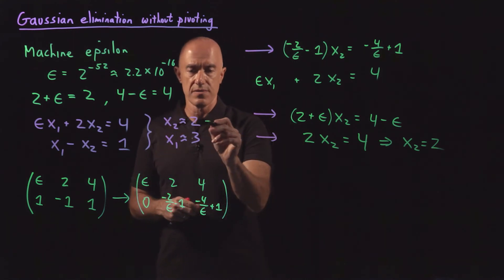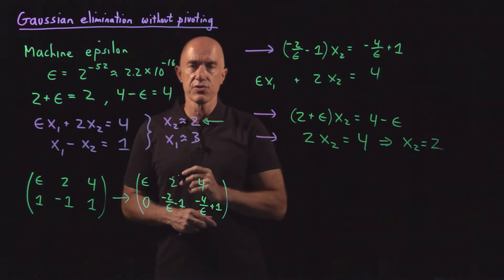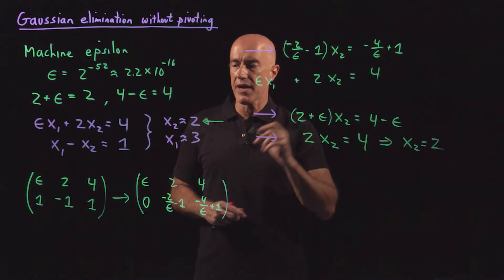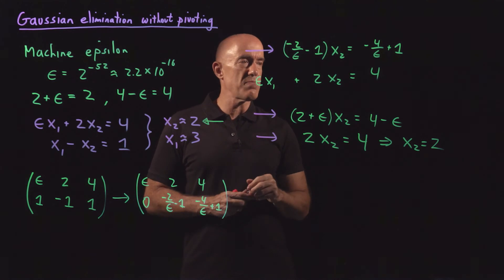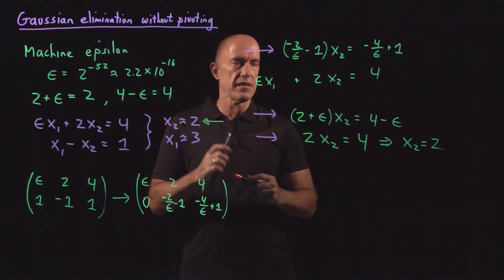So far we're not in trouble. x2 equals 2 is an excellent approximation to the exact solution. But now we get in trouble when we go to the second equation here.